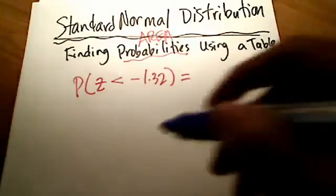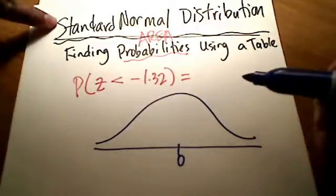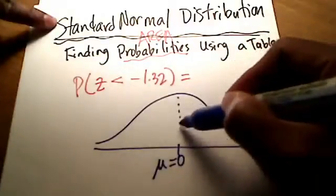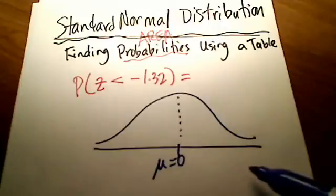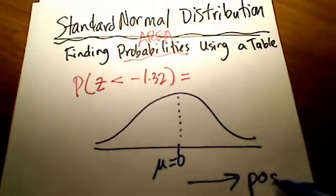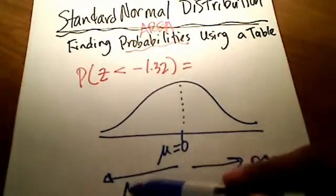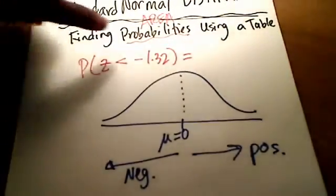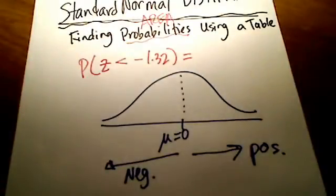Picture-wise, here's what's going on. I have a bell-shaped curve. Because it's standard, that means that the mean is sitting right in the middle. And so that means that everything to the right-hand side of zero is positive, and everything to the left-hand side of zero is negative. Well, that makes sense on the number line. If I was to try to find a negative 1.32, that's got to be somewhere on the left-hand side of zero.